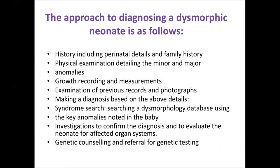As a clinician, your approach to making an accurate diagnosis begins with a good history, including perinatal details — especially whether the mother was on any drugs or had any illness, particularly viral illness — and family history of congenital problems or genetic disorders. Physical examination must be very detailed, noting minor or major anomalies and documenting growth measurements. Previous records and photographs are also helpful, as dysmorphic features are usually present at birth but can evolve as the child grows.